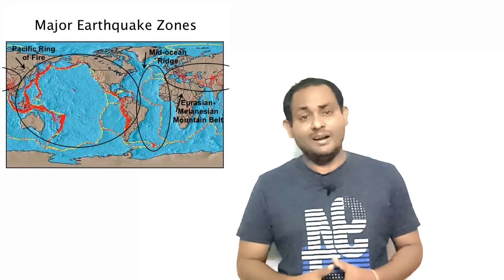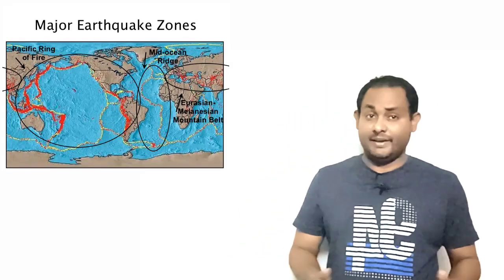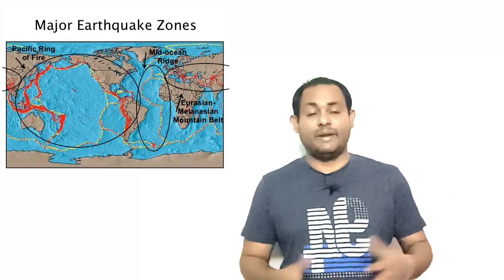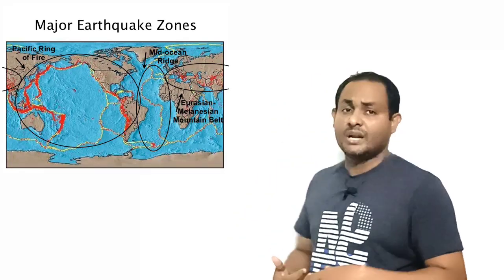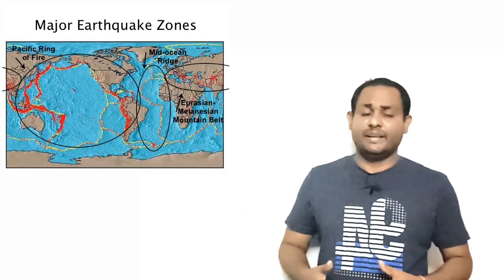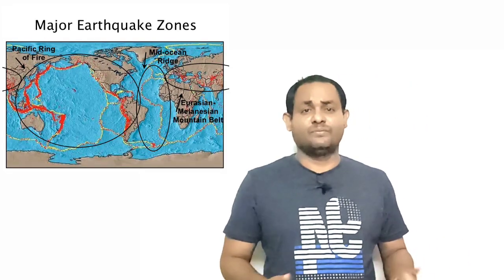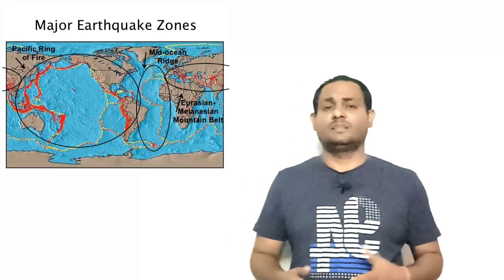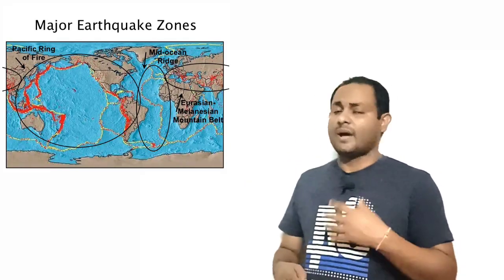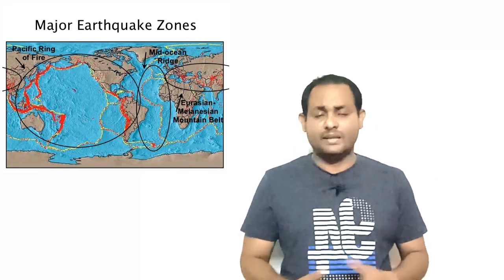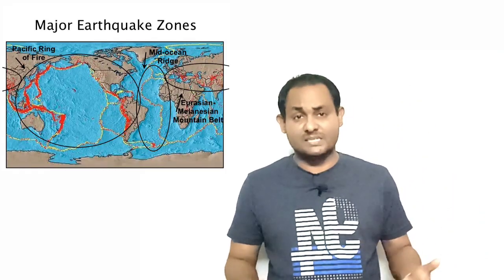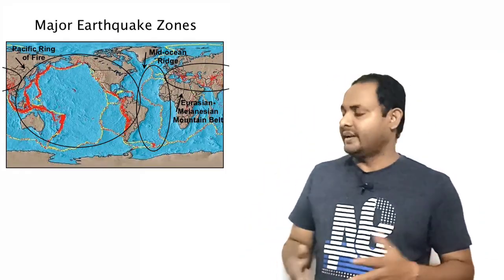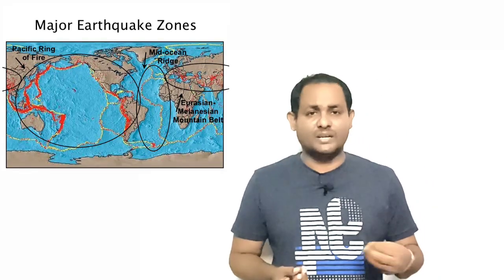The Mid-Atlantic Belt: this belt extends along the mid-oceanic ridges in the Atlantic Ocean and several islands. Seafloor spreading is the main cause of earthquakes in this belt. Earthquakes of moderate to mild intensity with shallow focus are recorded in this belt, including the Rift Valley of East Africa and Red Sea.